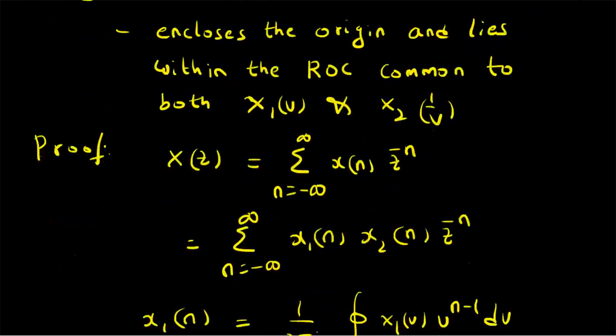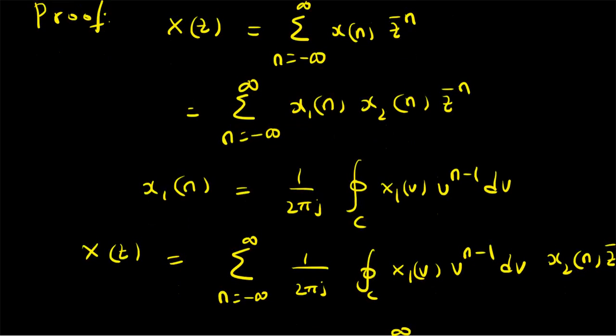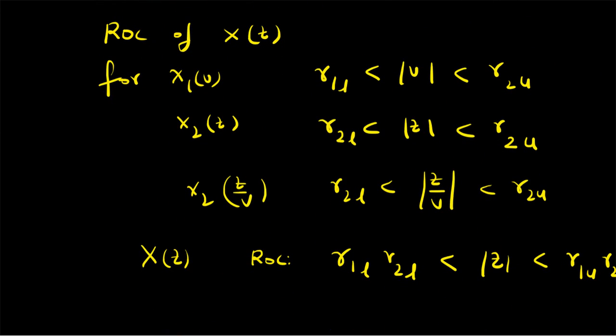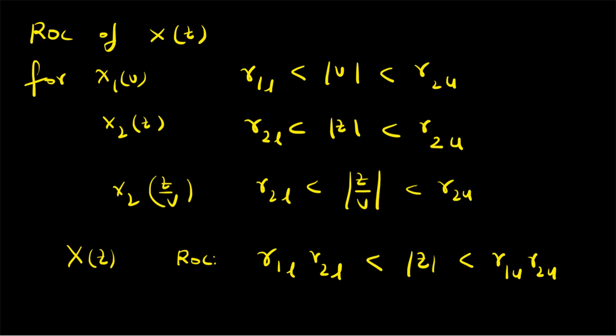The proof is based on expressing x1(n) as the inverse Z transform of X1(v), then substituting that definition into the Z transform of the product to get the final result: X(z) = (1/2πj) times the closed contour integral over C of X1(v) · X2(z/v) · v⁻¹ dv. The ROC is found by multiplying the inequalities of the two individual ROCs — R1L < |v| < R1U and R2L < |z/v| < R2U — giving the combined ROC. Thanks for watching.